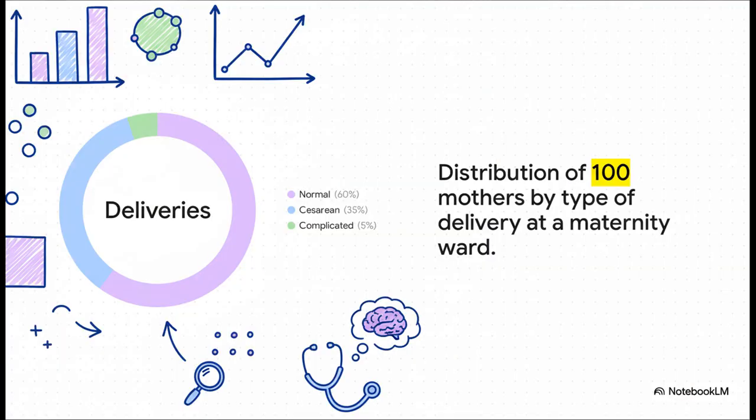For instance, look at this. This chart immediately shows that normal deliveries are, by far, the biggest slice of the pie in this maternity ward. These visual slices give you a much more intuitive feel for the proportions than just a list of percentages ever could. And this kind of at-a-glance insight is vital for things like resource planning and understanding the workload on your ward.